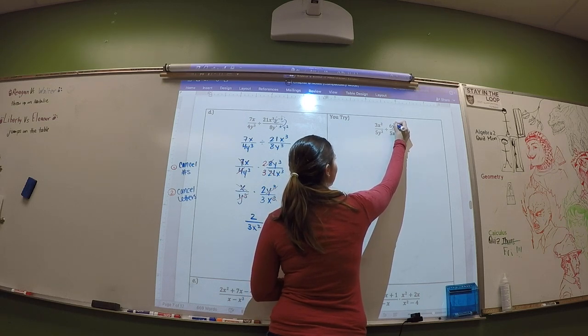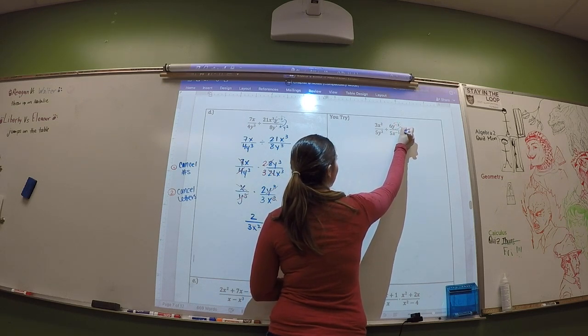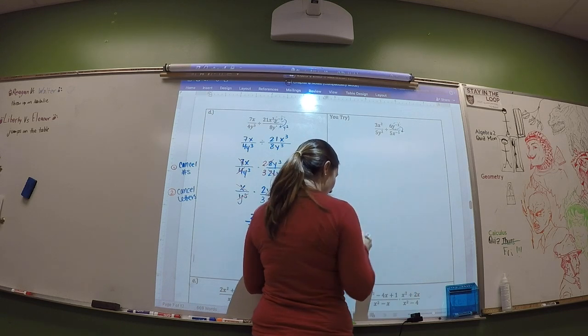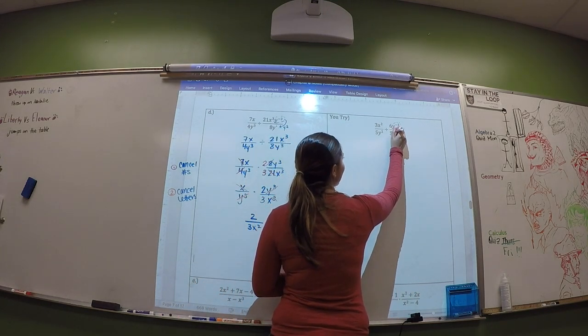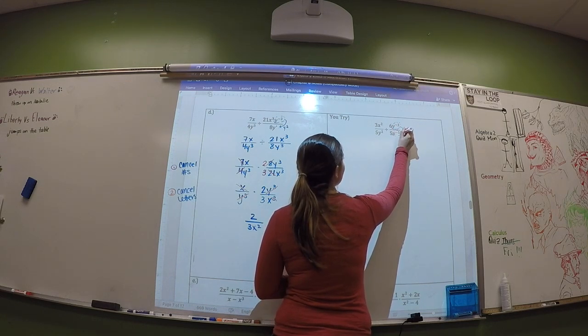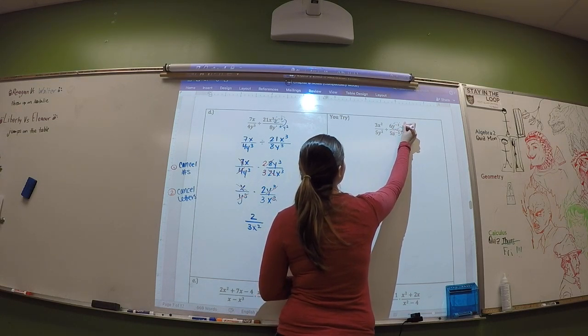Since this is negative in the numerator, we're going to put it in the denominator. And then since x to the negative 5 is negative in the denominator, we're going to put that in the numerator.